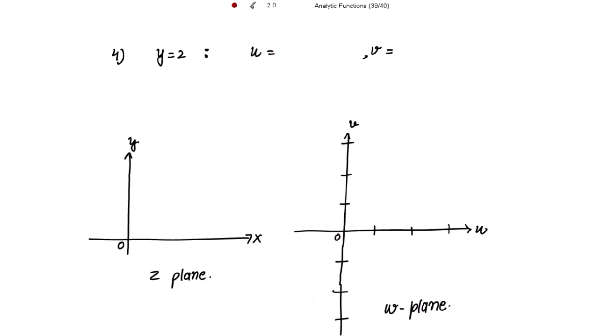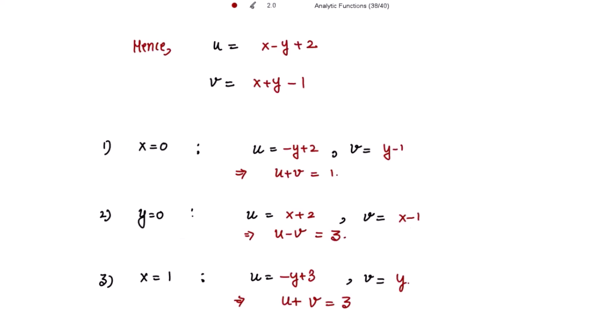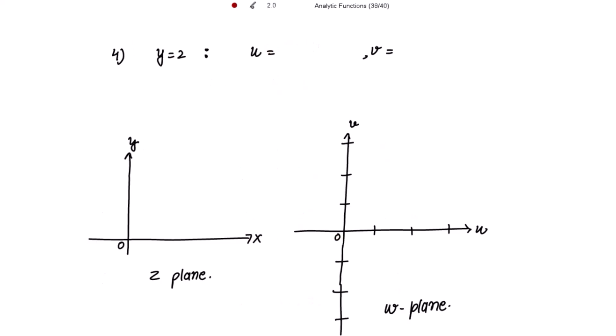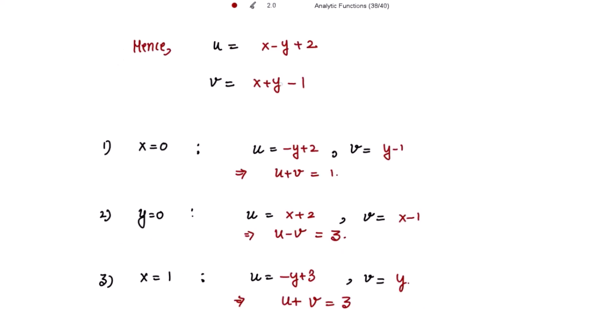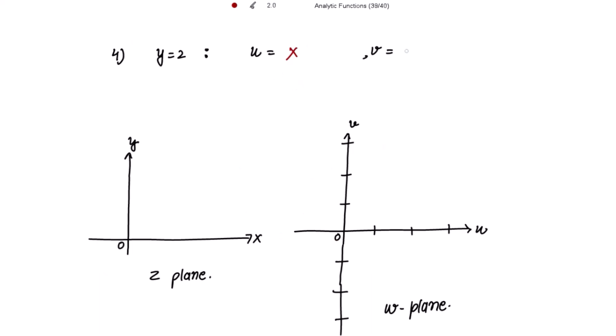For y = 2, the 2s cancel and we get u = x, and v = x + 1. Solving this gives the equation v - u = 1. So now let's plot the resultant equations.